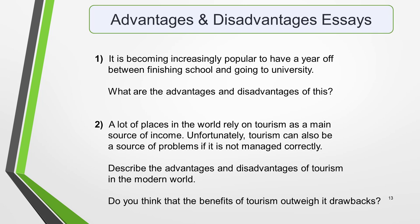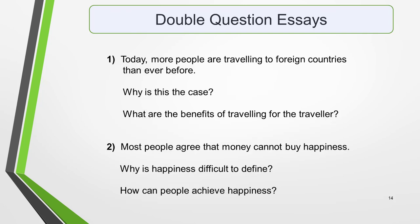Finally, we have the Double Question essay, sometimes called a Direct Question essay. This type of question has one statement with two different questions after it. They may or may not be linked. Example 1: 'Today more people are travelling to foreign countries than ever before. Why is this the case? What are the benefits of travelling for the traveller?' Example 2: 'Most people agree that money cannot buy happiness. Why is happiness difficult to define? How can people achieve happiness?' It's vital that you answer both questions fully.